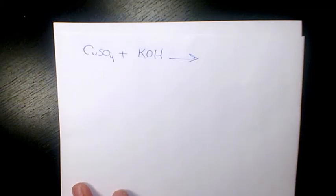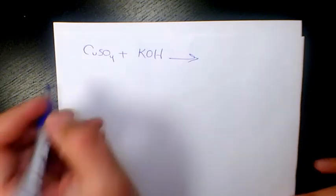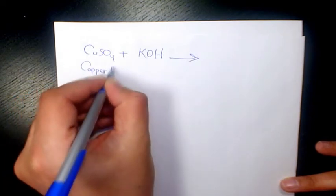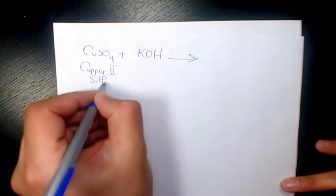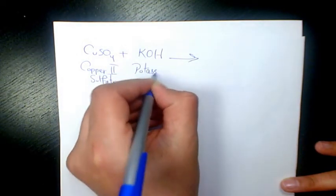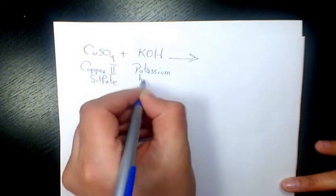What's up guys, this is Massey. Welcome to another video. In this video I want to show you the reaction between copper(II) sulfate and potassium hydroxide. So here we have copper(II) sulfate and in here we have potassium hydroxide.